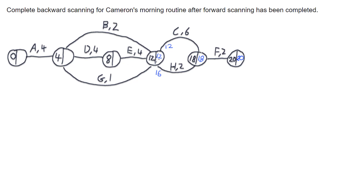Coming back through again I can now do these next paths. Starting with 12: 12 take 4 gives me 8. Then working out the other paths: 12 take 1 gives me 11, 12 take 2 is 10, and 8 take 4 is 4. I pick the smallest one again, which is 4. Then doing my last activity: 4 take 4 gives me 0, which makes sense — the latest I can start A is at the very start of the project.